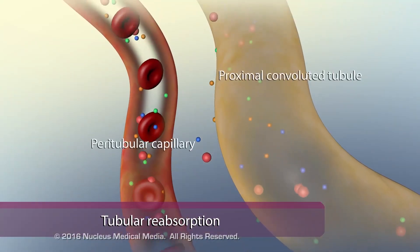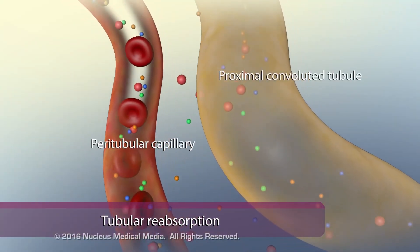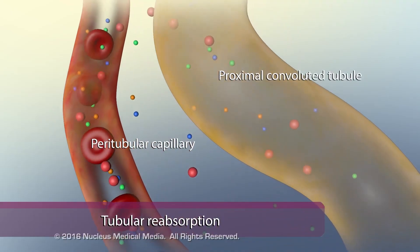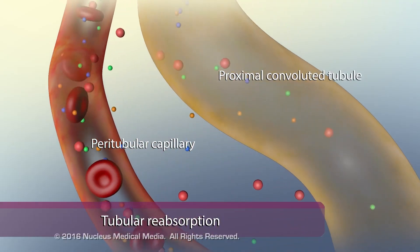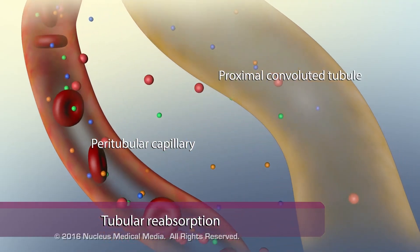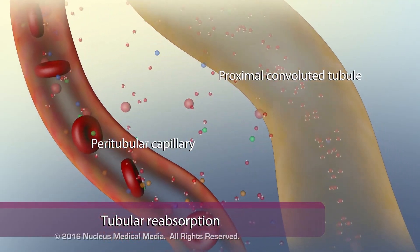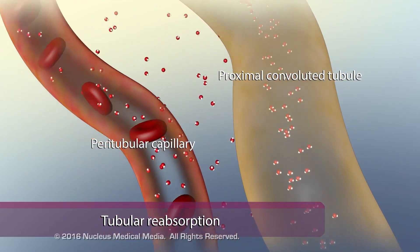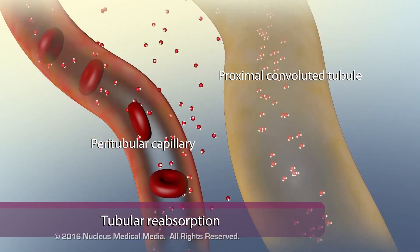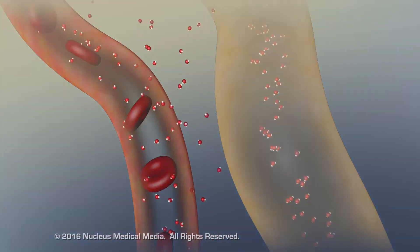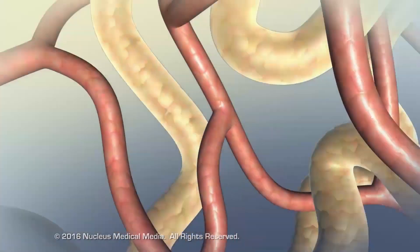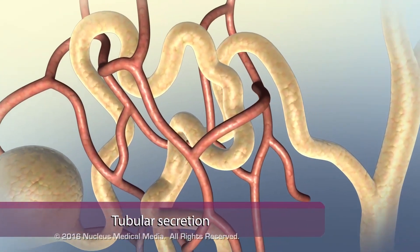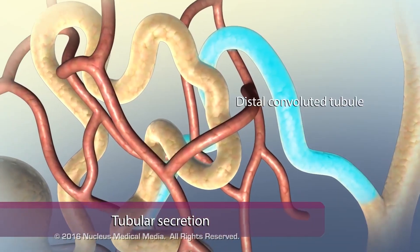Specifically, glucose, amino acids, and some sodium and calcium ions are reabsorbed by active transport. The peritubular capillary reabsorbs water through osmosis.